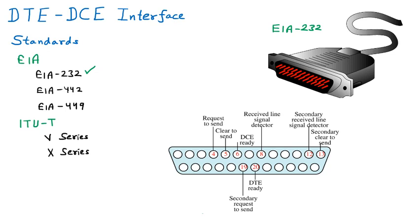The next pins are called control pins. As the name suggests, control pins are for controlling purposes. While data pins are for sending and receiving data, control pins are used to control that data flow.